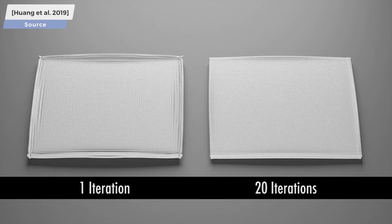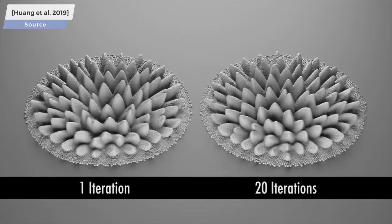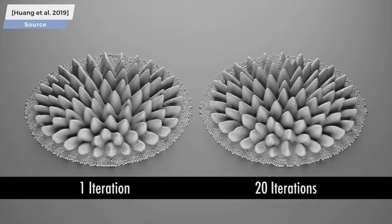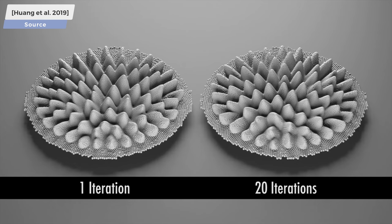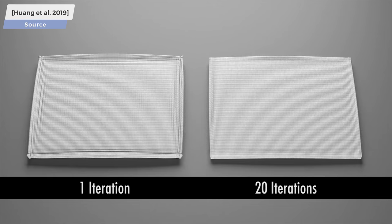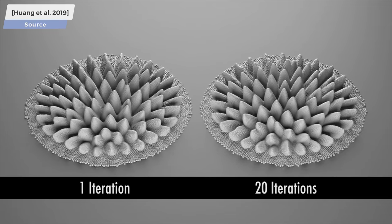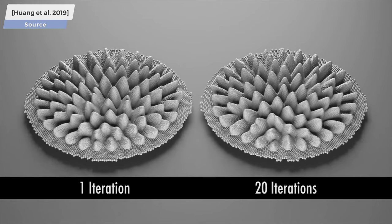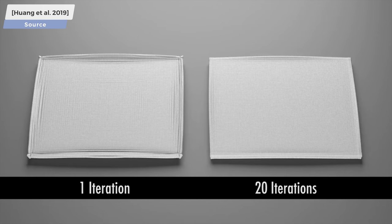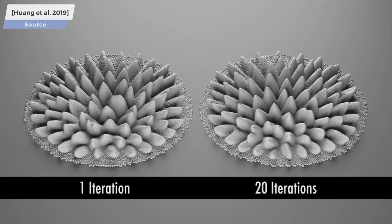You see here how the simulation output depends on the number of iterations. More iterations means that we redo the calculations over and over again and get results closer to what would happen in real life at the cost of more computation time. However, as you see, we can get close to the real solution with even one iteration, which is remarkable.